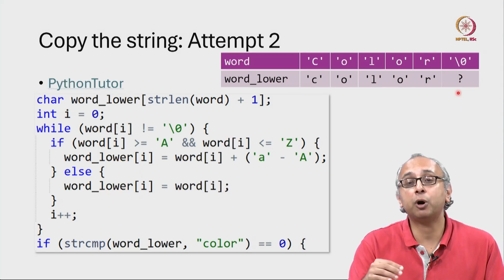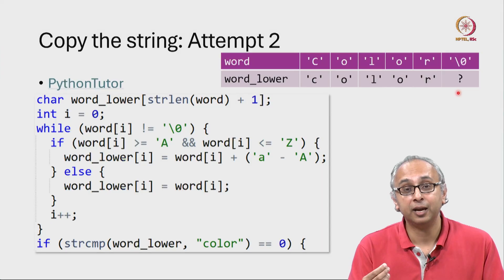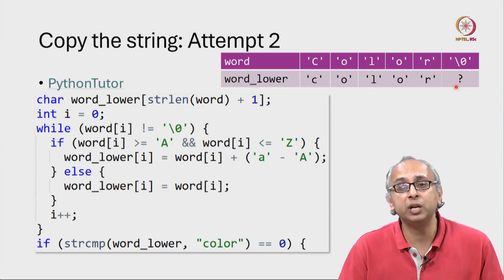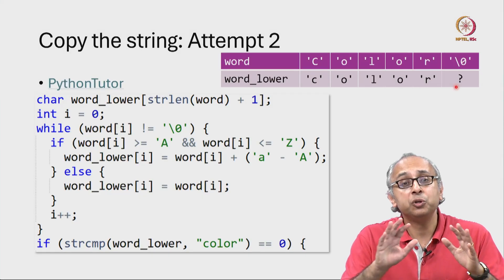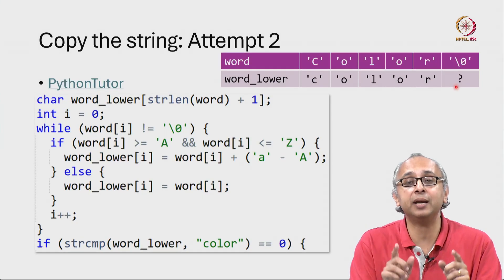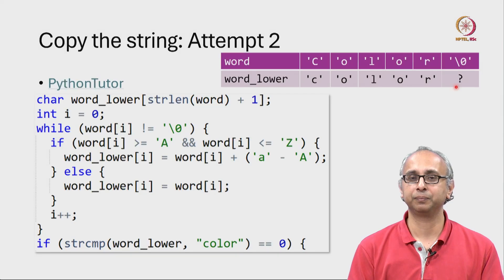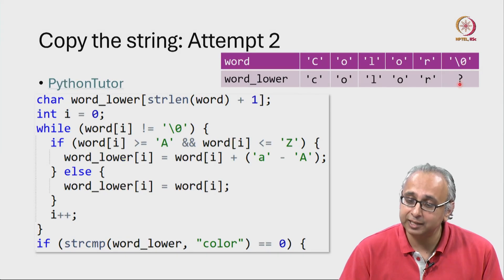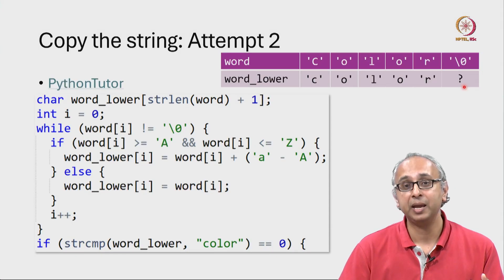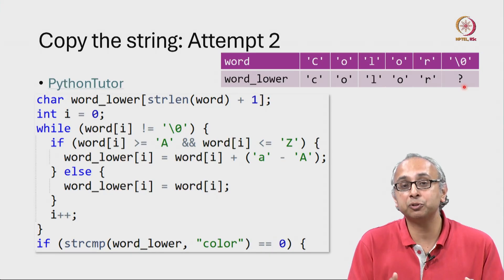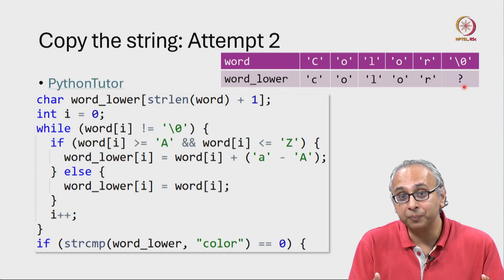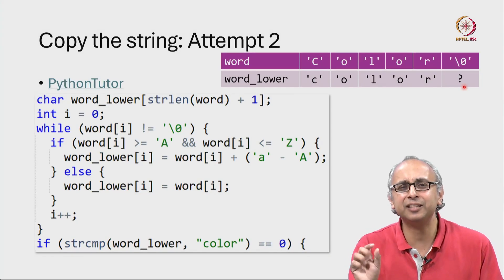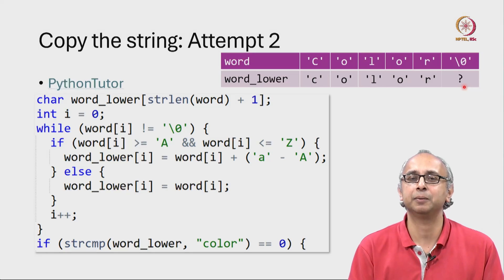If you are very, very unlucky, the value at that location will be the null character and your code will run and you might think that your code is correct. If you were lucky, the value at that location will be some garbage value and your code might produce some unexpected behavior or it might crash and then you have a chance of detecting this very subtle mistake.